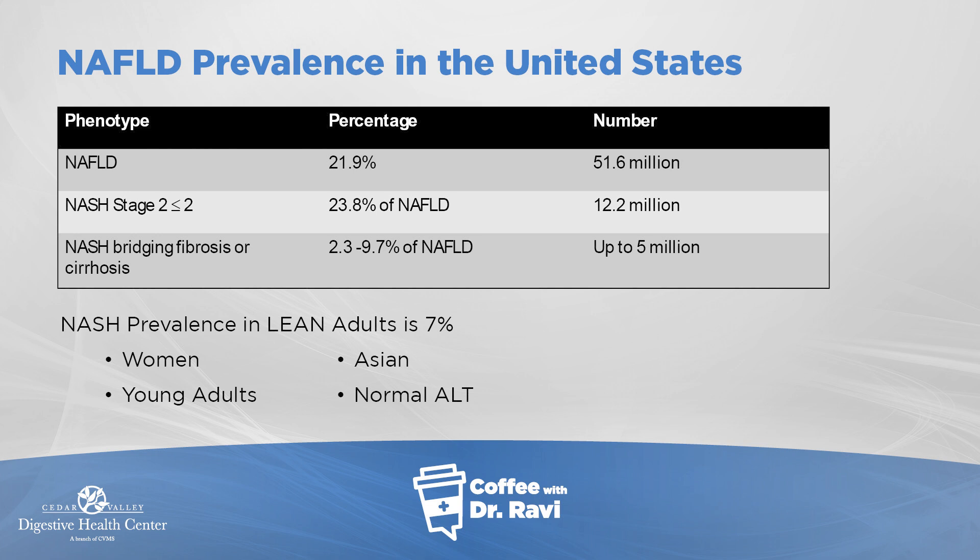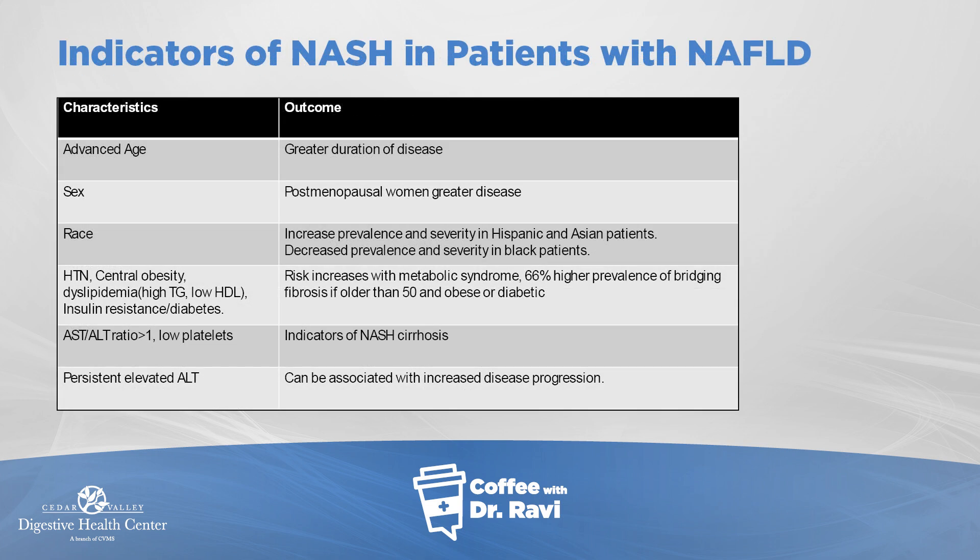What sub-causes drive progression from simple fatty liver to scar tissue? The greater the duration one has fat sitting in the liver, the higher the risk. It is also more prevalent or severe in post-menopausal women, in patients who are Hispanic or Asian, and seems to be less severe in the African-American population. Associated metabolic disease or metabolic syndrome also accelerates progression.